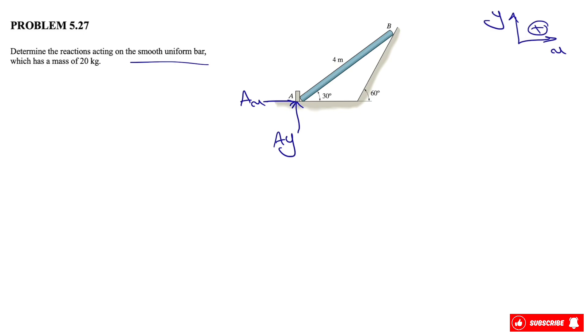We know we have the weight of this beam, which would be at the center, and we know the mass is 20 kilograms. And if we want to find the weight, we simply have mass times acceleration of gravity. We know g equals 9.81 meters per square second.